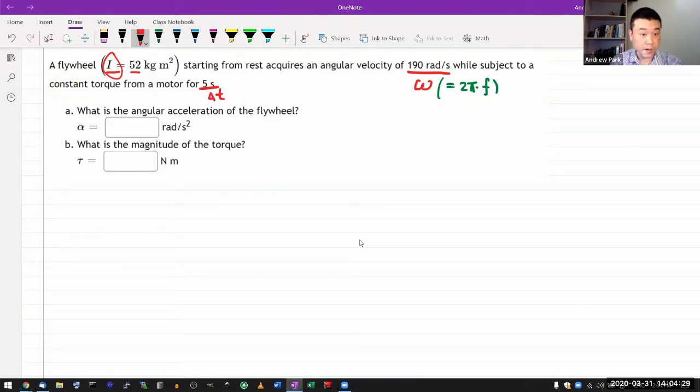It asks for what is the angular acceleration of the flywheel? So the reason I wanted to go over this question is really to remind you of things that you have learned, that as we start to talk about rigid body rotation, a surprising amount of this is rehash or review of what you have already learned.